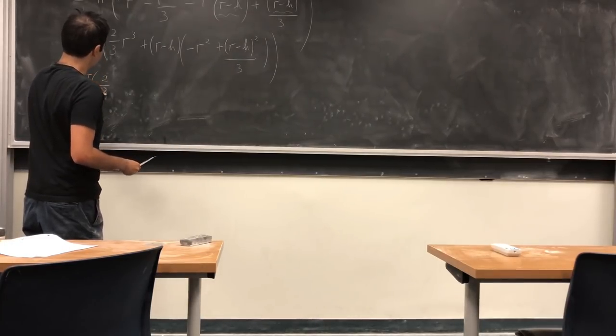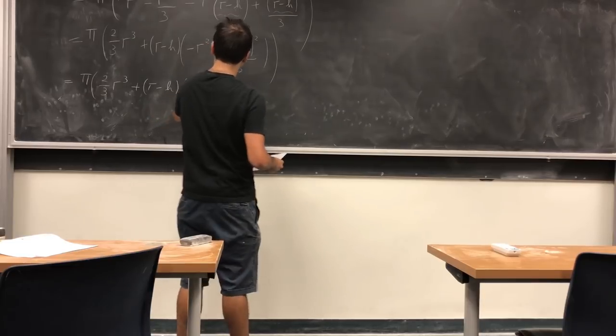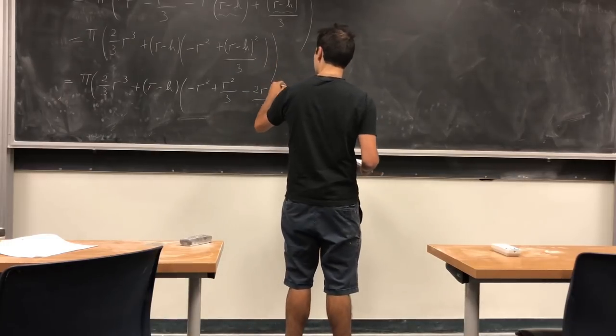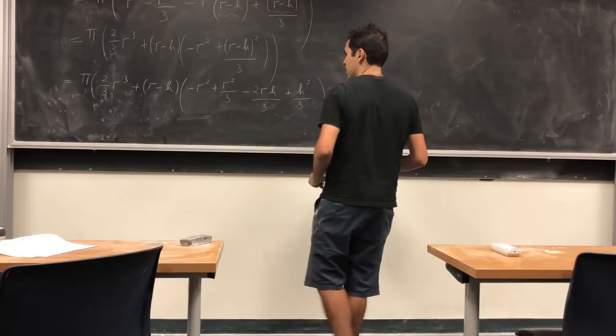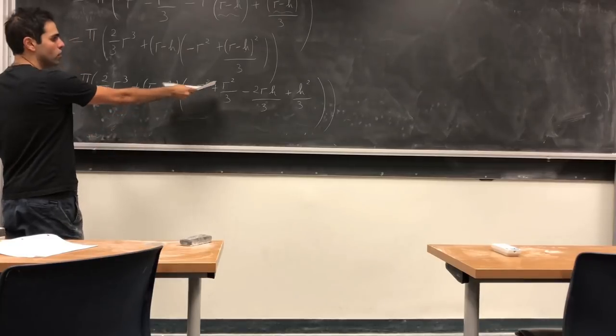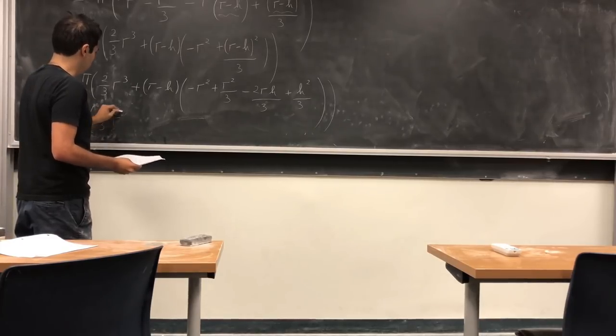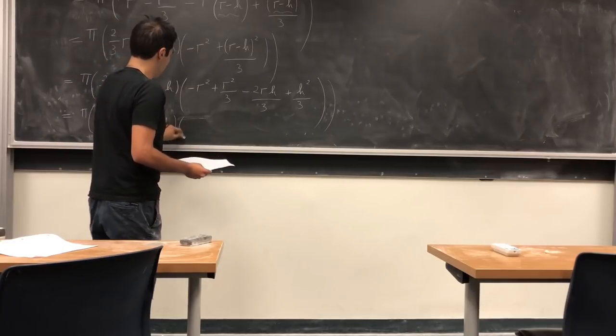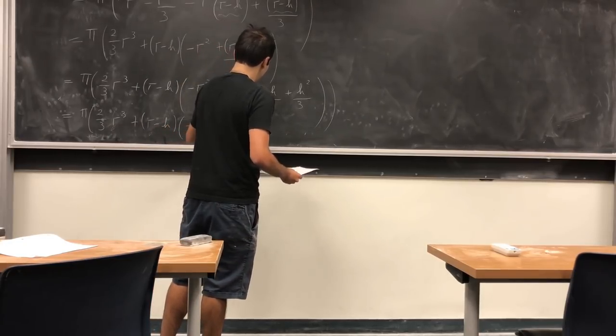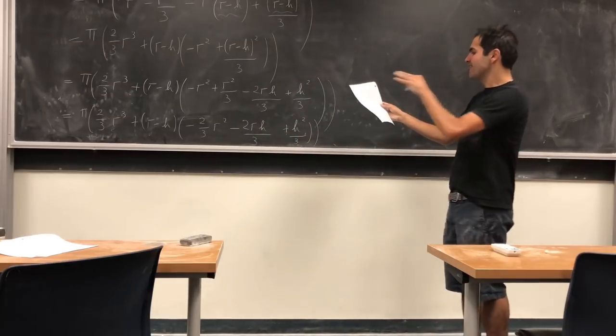And now, let's have a little expansion party. So it's π times 2/3 r³ plus (r - h)[-r² + r²/3 - 2rh/3 + h²/3], which you can simplify a little bit. Namely, -r² + r²/3 becomes -2/3 r². So π times 2/3 r³ plus (r - h)[-2/3 r² - 2rh/3 + h²/3]. Okay, all right, and I promise we'll simplify in the end.